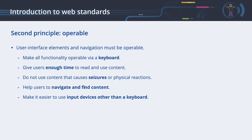Second principle: Operable. User interface elements and navigation must be operable. The guidelines for this principle are: make all functionality operable via a keyboard; give users enough time to read and use content — this is especially necessary when using user interfaces that change over time or use timeouts; do not use content that causes seizures or physical reactions — this guideline should be respected by those using animated or flashing content; help users to navigate and find content; and make it easier to use input devices other than a keyboard, especially important for those users with limited control of their hands.